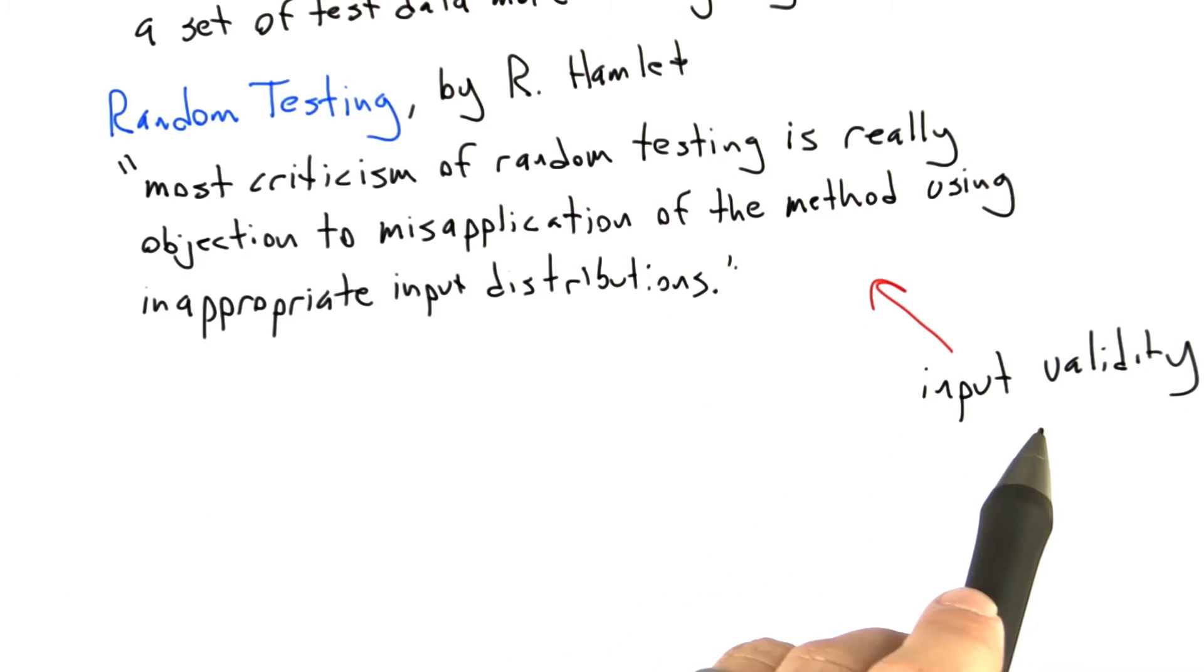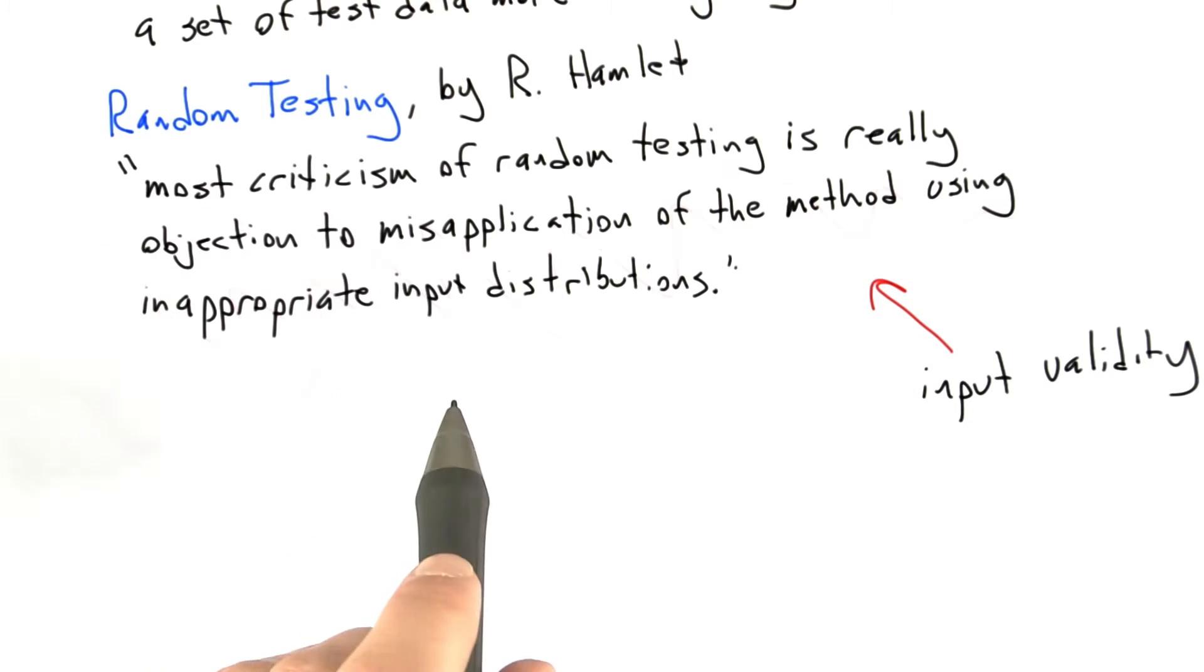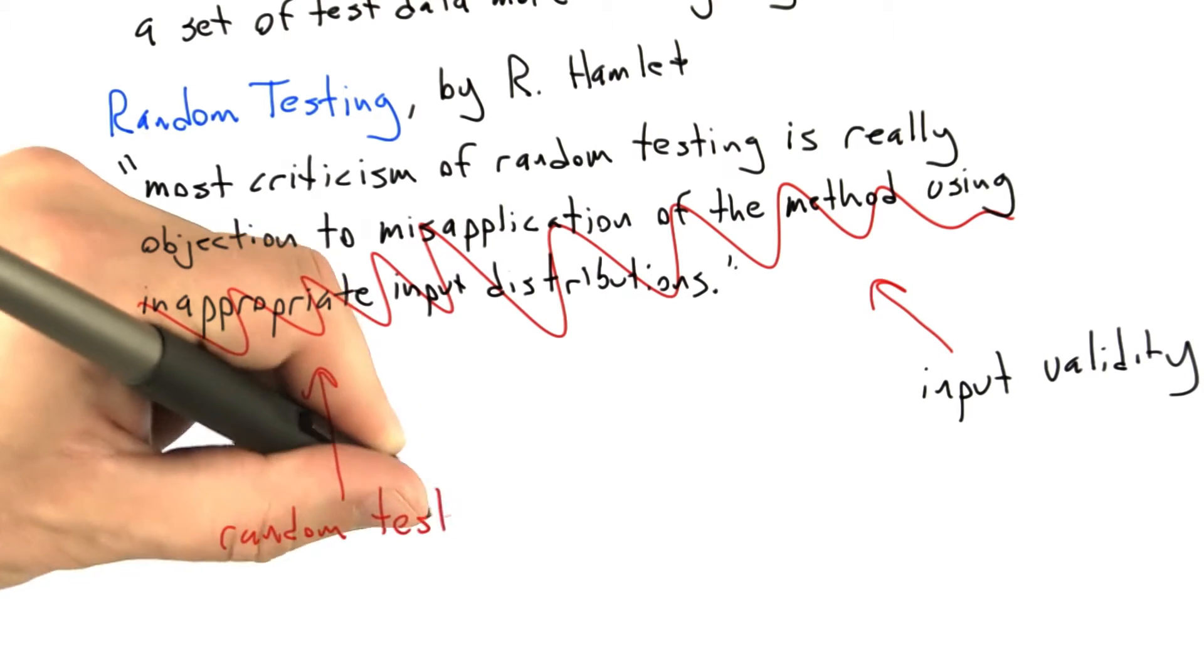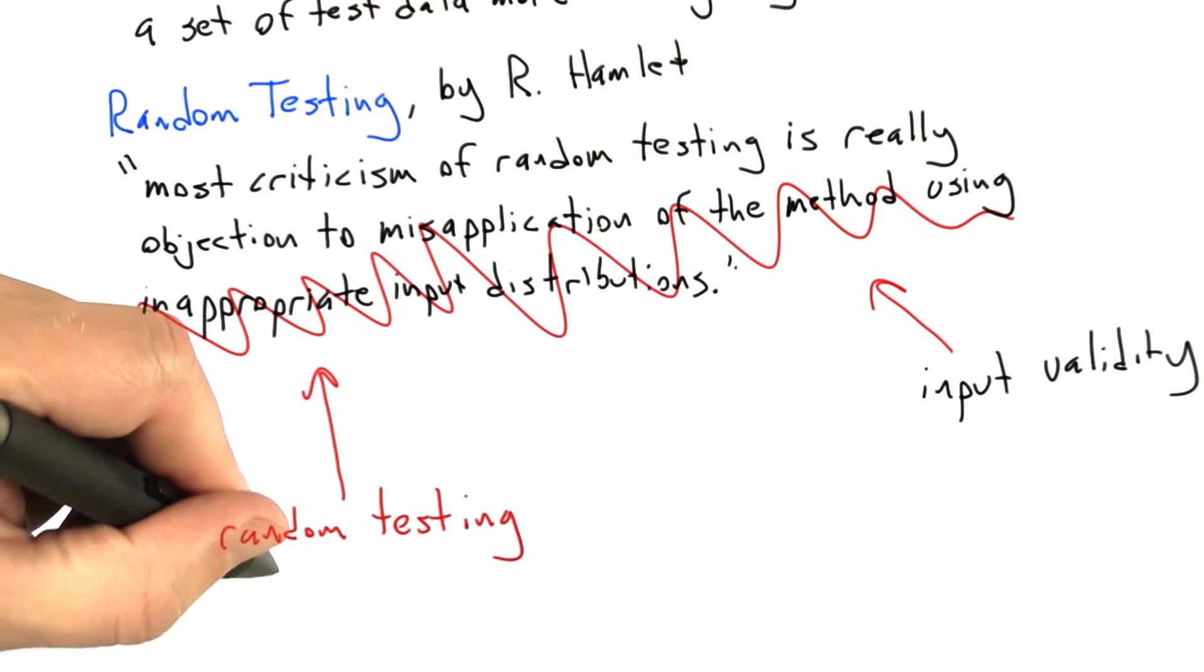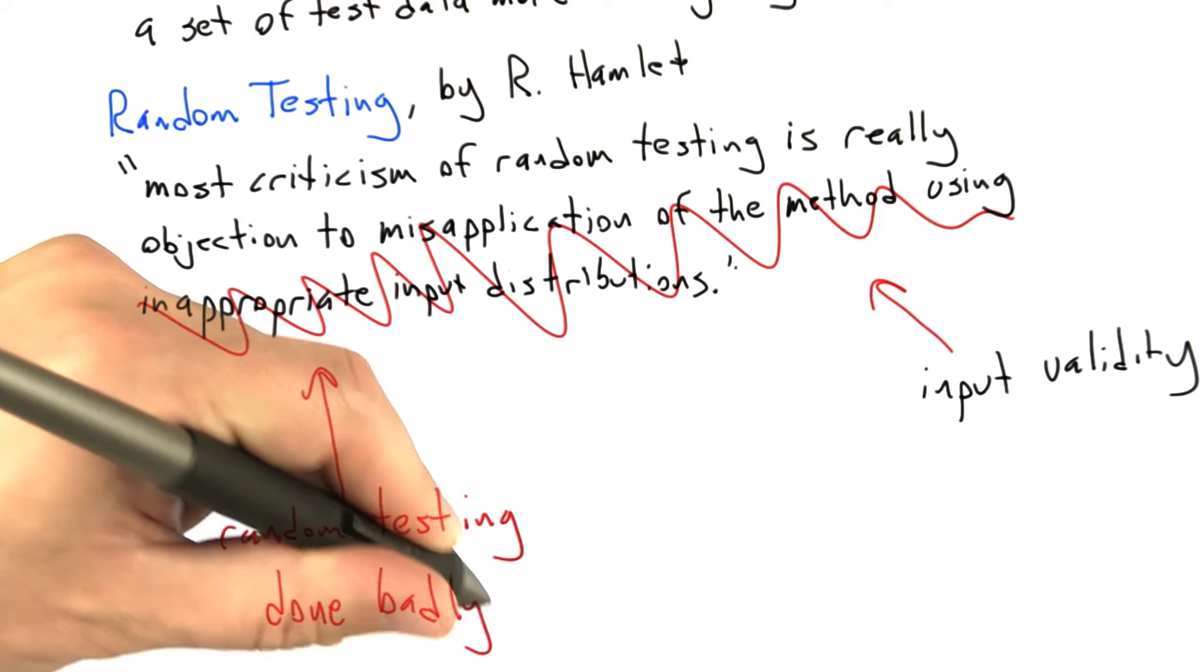And what he means is that if you ignore the input validity problem and you just test randomly using completely random garbage, you're going to get a bad impression of the method because it's not going to work very well. You're going to experience a phenomenon that we talked about a little bit ago where all of the test cases get rejected by very early parts of the software under test.